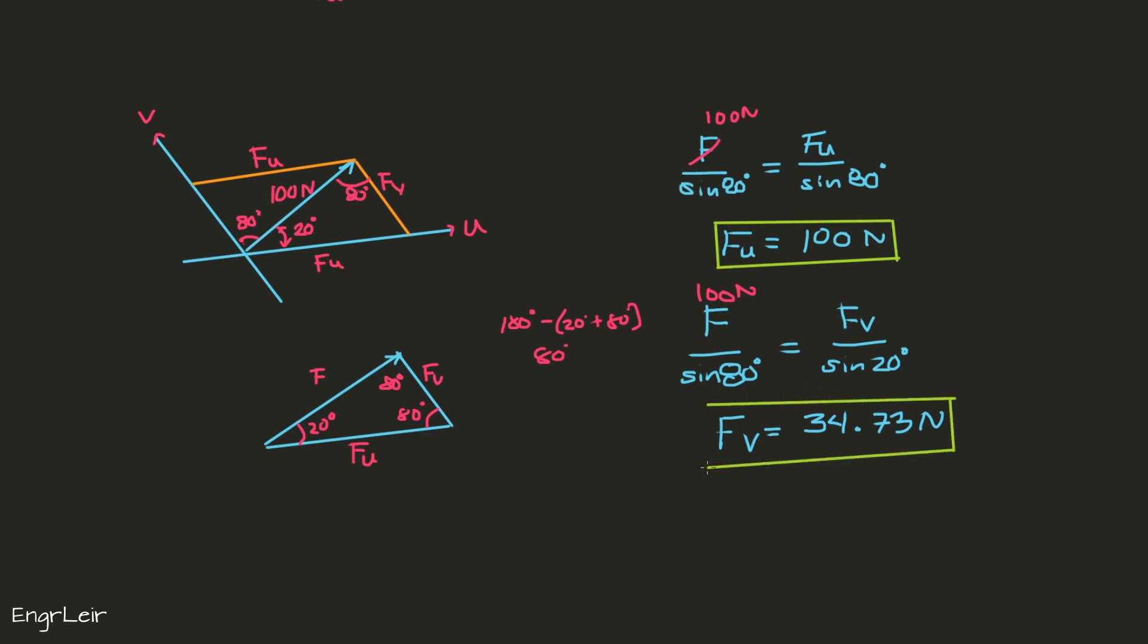So these are the answers for this example. The components of the 100 Newton force: in the u-direction, 100 Newtons, and in the v-direction, 34.73 Newtons.